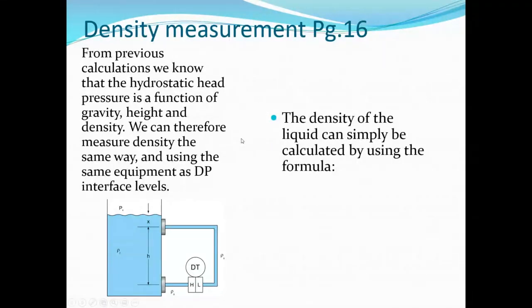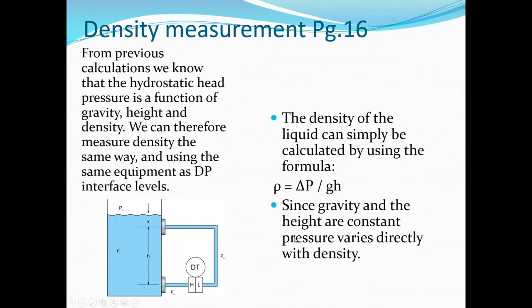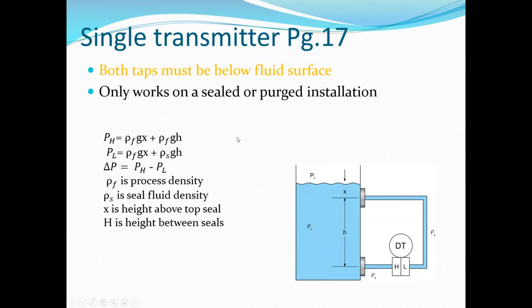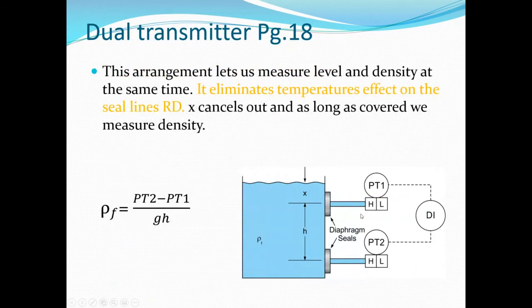The density of a liquid can be calculated using: density (ρ) = differential pressure / (gravity × height). Since gravity and height are constant, the pressure varies directly with density. For the single transmitter style, both taps must be below the fluid surface, and it only works on a sealed, purged, or filled installation.